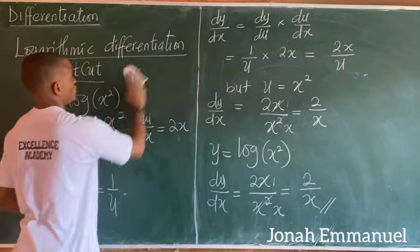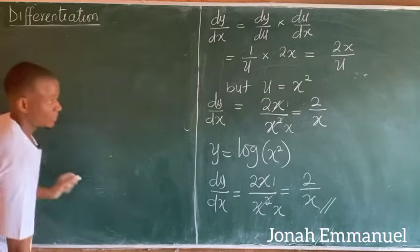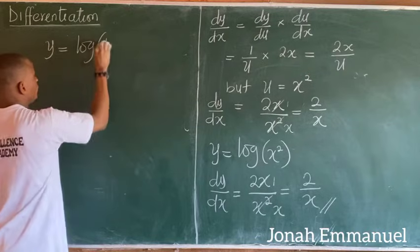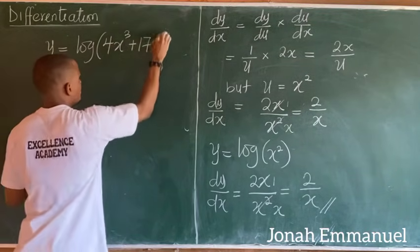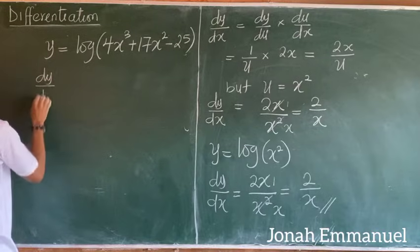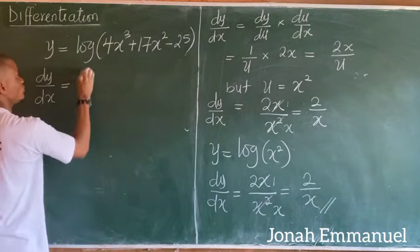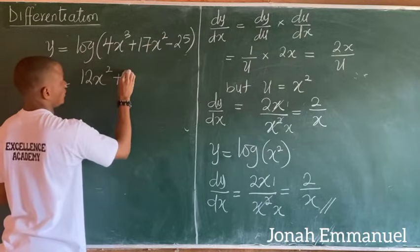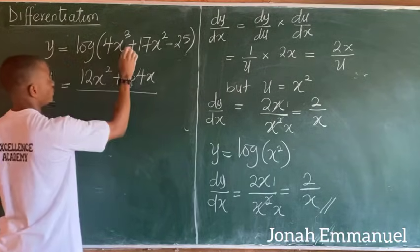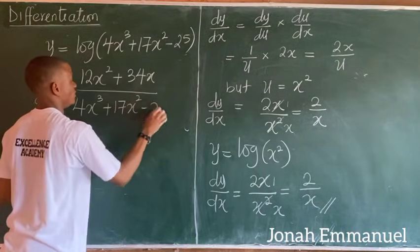That's the shortcut for differentiating logarithmic functions. Given y equals log(4x³ + 17x² − 25), using the shortcut: differentiate the term in the brackets to get 12x² + 34x (the constant 25 gives 0), all over 4x³ + 17x² − 25.